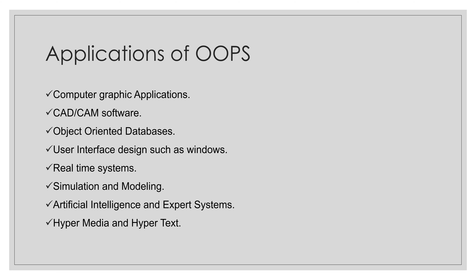Third, object oriented databases, also called object database management systems — these store objects instead of simple data like real numbers and integers, maintaining a direct correspondence between real world and database objects to let them retain identity and integrity. Fourth, user interface design such as Windows — graphical user interface design using OOP is a very interesting feature of programming.